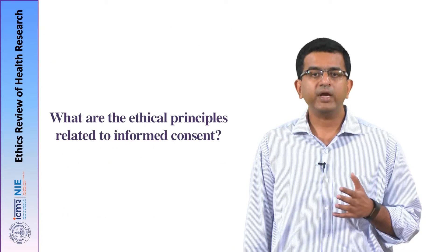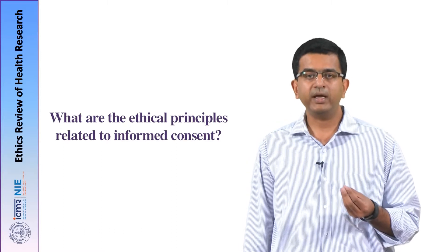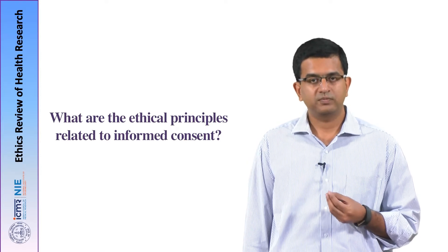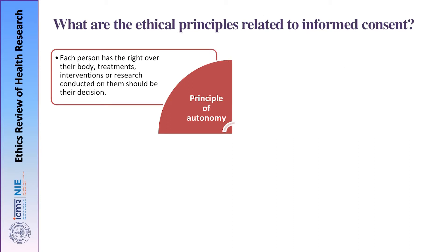Now let us look at the various ethical principles that underlie the informed consent process. The principle of autonomy is the most important. Autonomy means each individual has a right over their body and the right to make decisions about what happens to them in terms of treatment, interventions, and research conducted on them. Basically, the principle of autonomy means they have complete ownership or self-determination over their body.